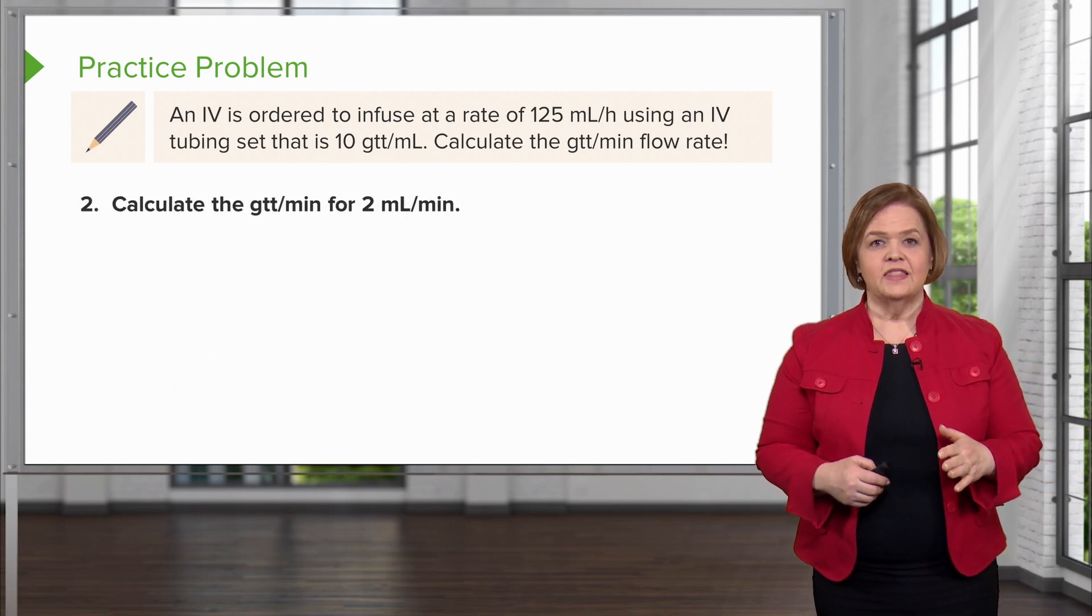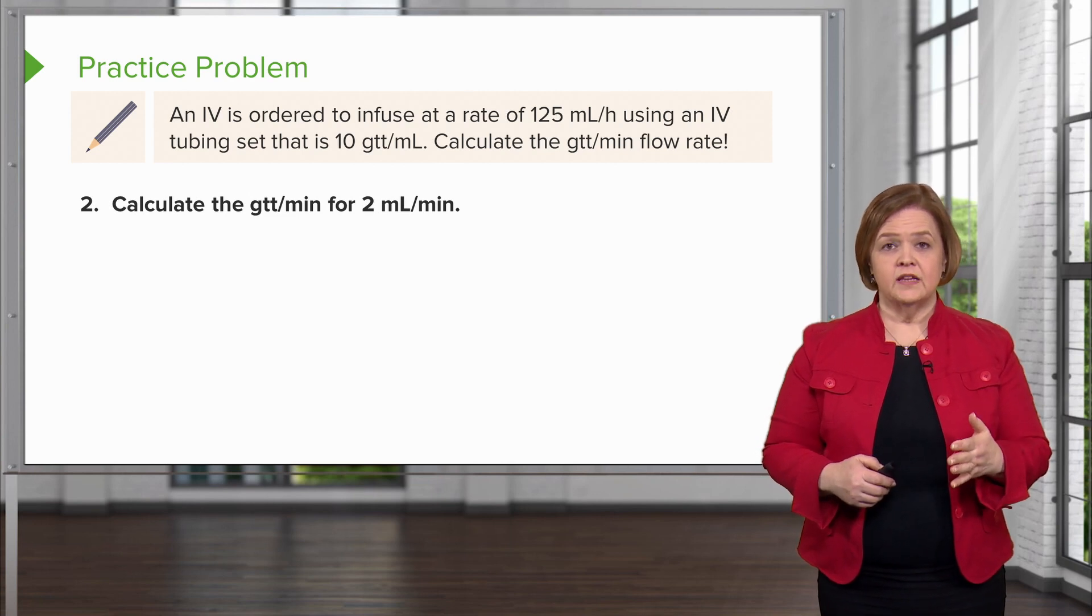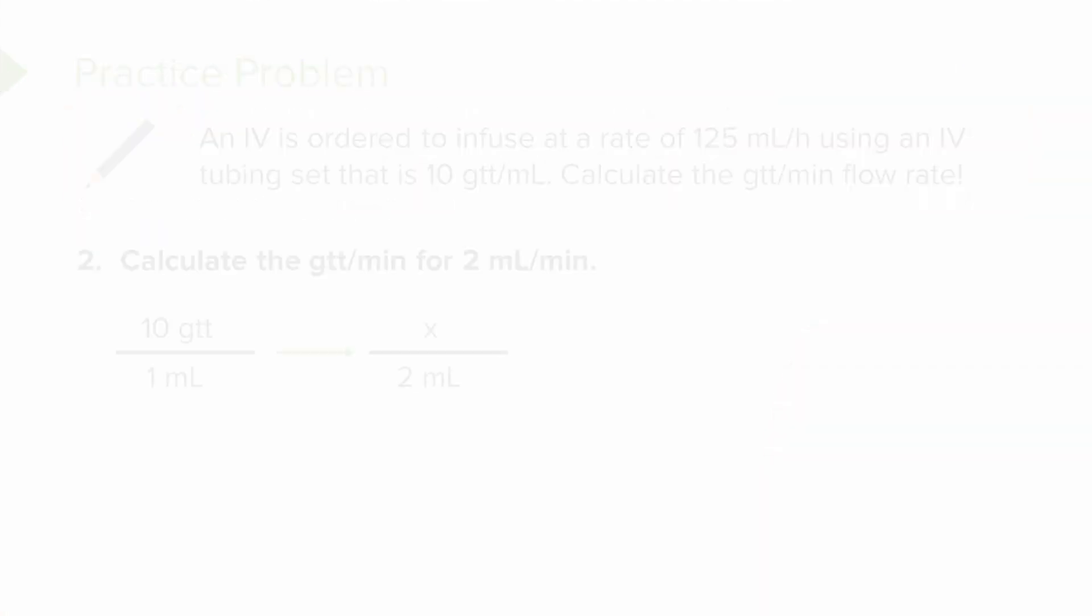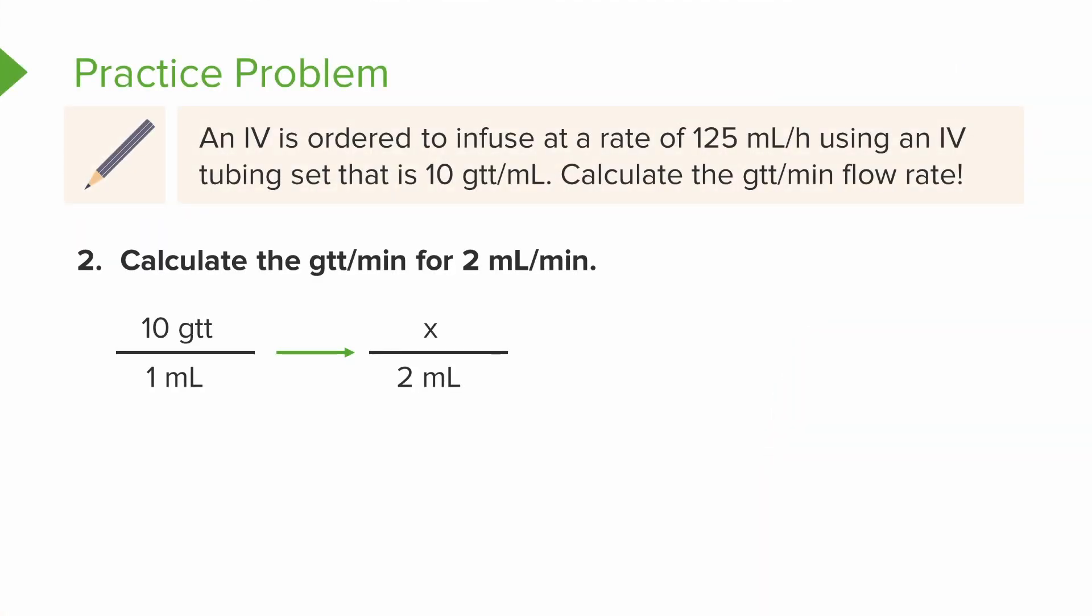Next step: let's calculate the drops per minute to get 2 milliliters every minute. The tubing set tells us it takes 10 drops - counting one through ten - to equal 1 milliliter. So if I know 10 drops equals 1 milliliter, I need to know how many drops are in 2 milliliters.